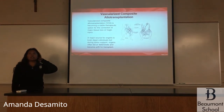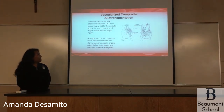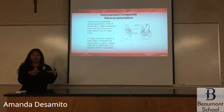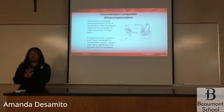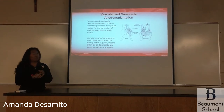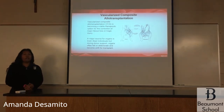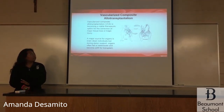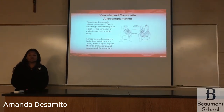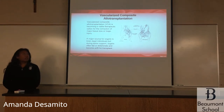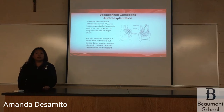Another big part of my project is vascularized composite allotransplantation, or VCA. When this happens, a chunk from a donor is transplanted to a recipient, and that can include cells, muscle tissue, bones, nerves, and other components. This is becoming a viable therapeutic option when there is a need for correction of major tissue loss or tragic injury. A major source for organs is through brain-dead donors. However, during donor support, organs often fail or deteriorate and are left inoperable.